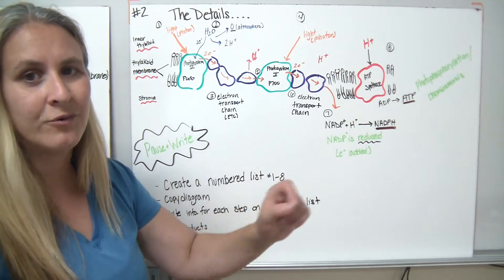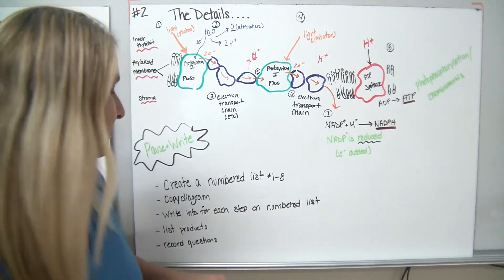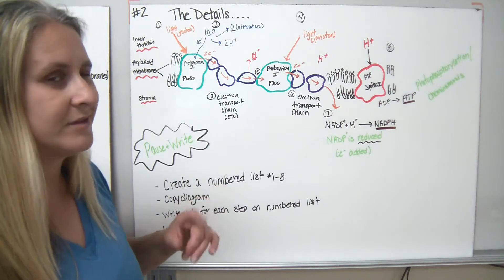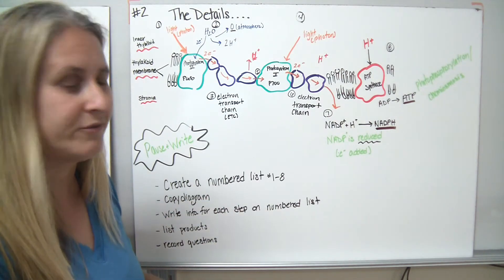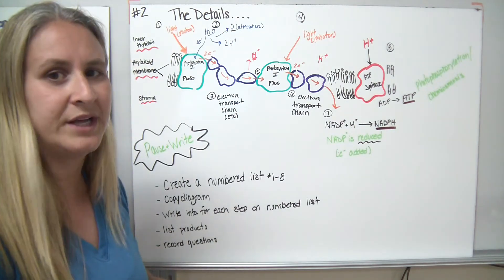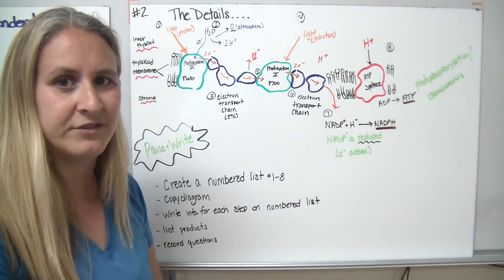Have your one through eight. Write down what's described for each of those steps. List the products, which if you're pretty slick, you'll notice that those products are pretty well identified for you, and record any questions that you have. Remember, we've left the margin on the right.